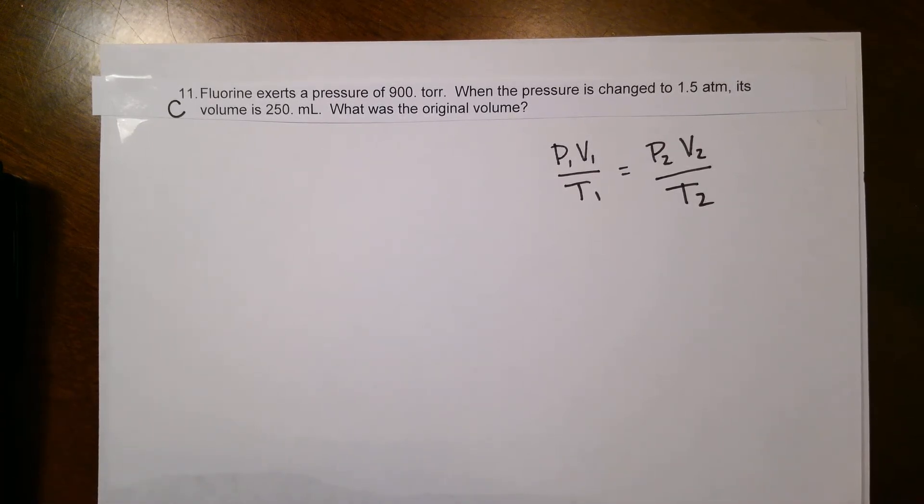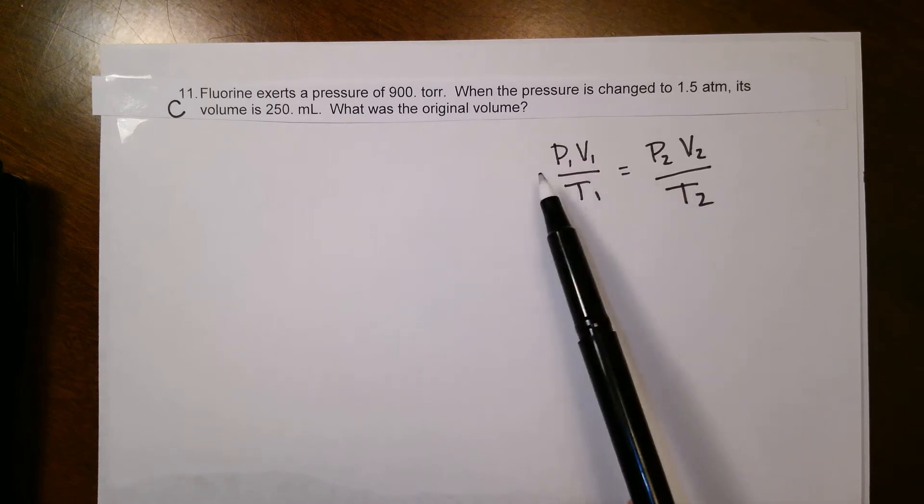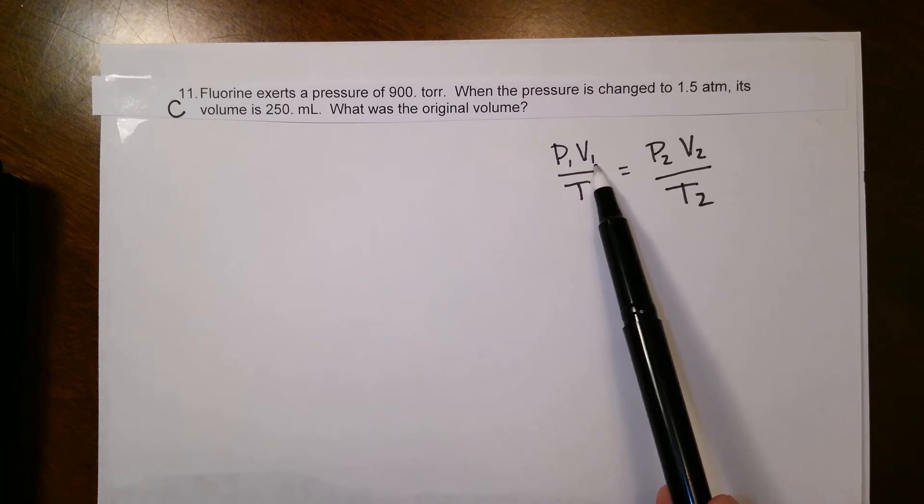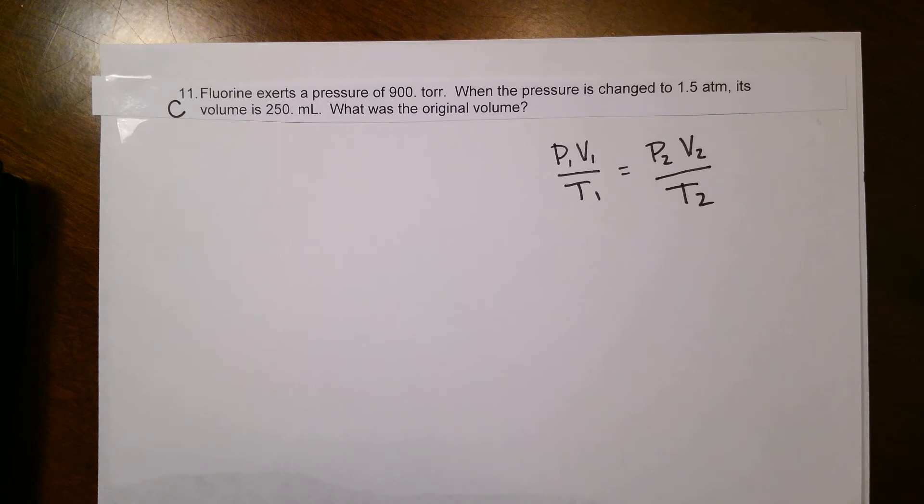I have a couple things to remember about this. Whenever you're plugging something in, for instance P1 and P2, those units have to match. So if you plug in torr on one side, torr is coming out on the other side. Plug in liters for volume, liters coming out on the other side. Make sure those units always match from one side to the other.